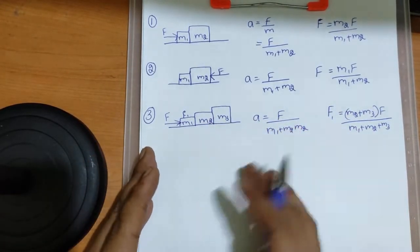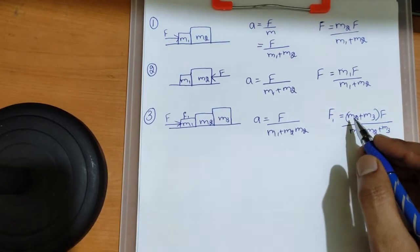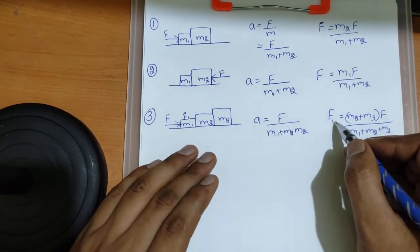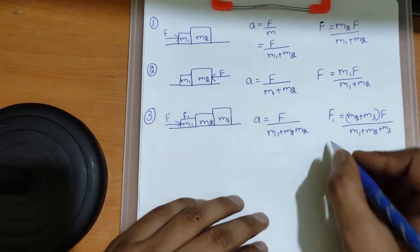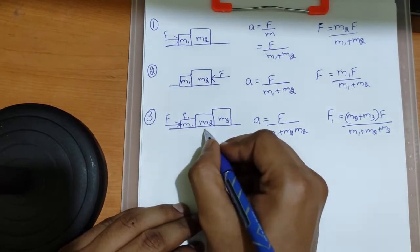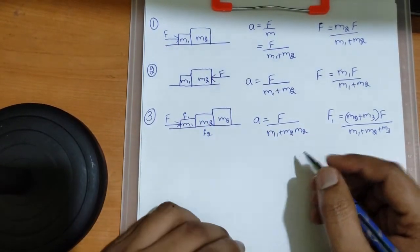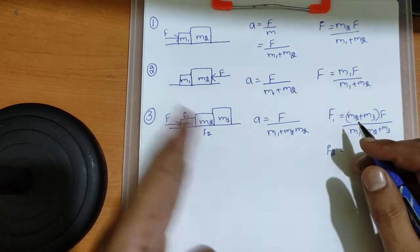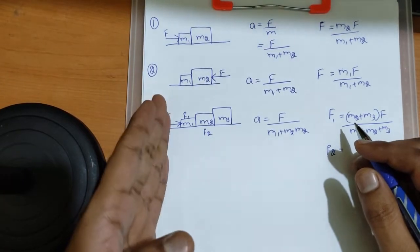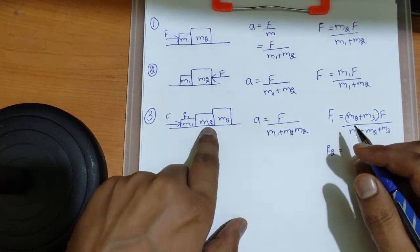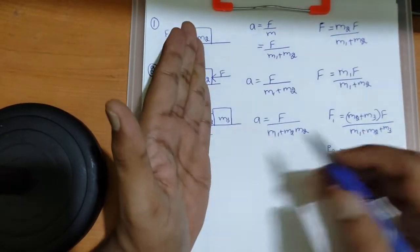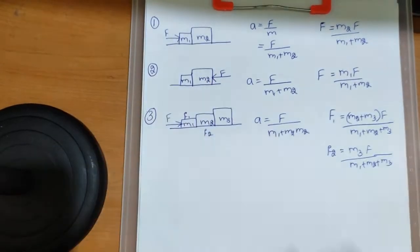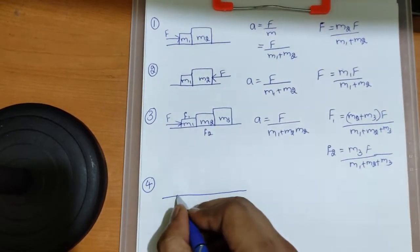If you want a detailed explanation of how this works — to really feel it — in this video I'm just explaining the trick, but I'll explain the formula derivation in another video. Now if they ask you for f2, the contact force between m2 and m3: the force is being applied from the left side, so imagine the force is being applied on m2. Forget everything up to m2 — what is remaining is m3. So f2 equals m3 times F by the sum of the masses.